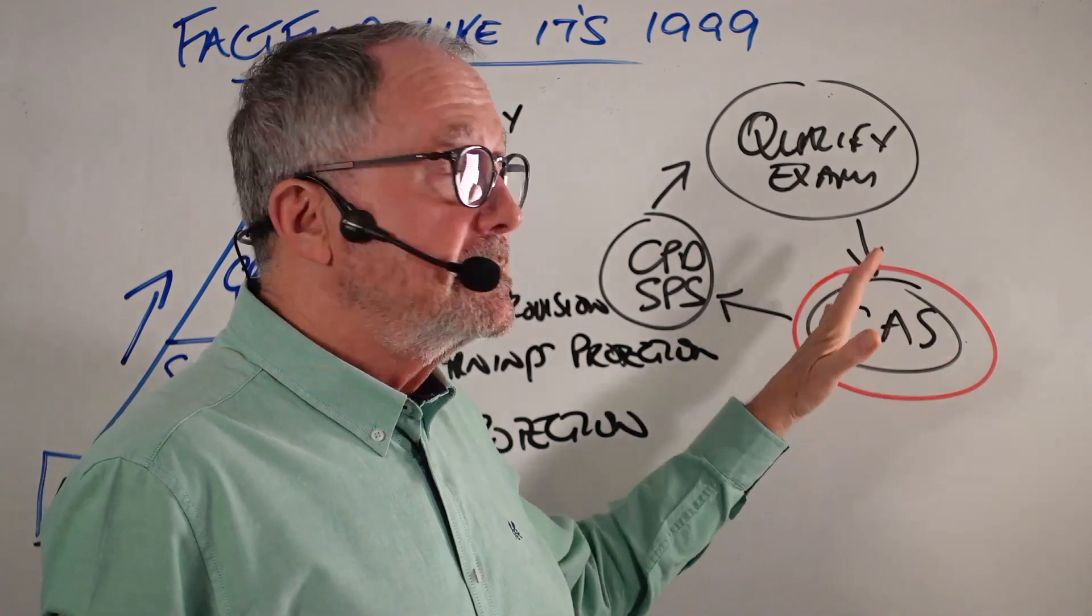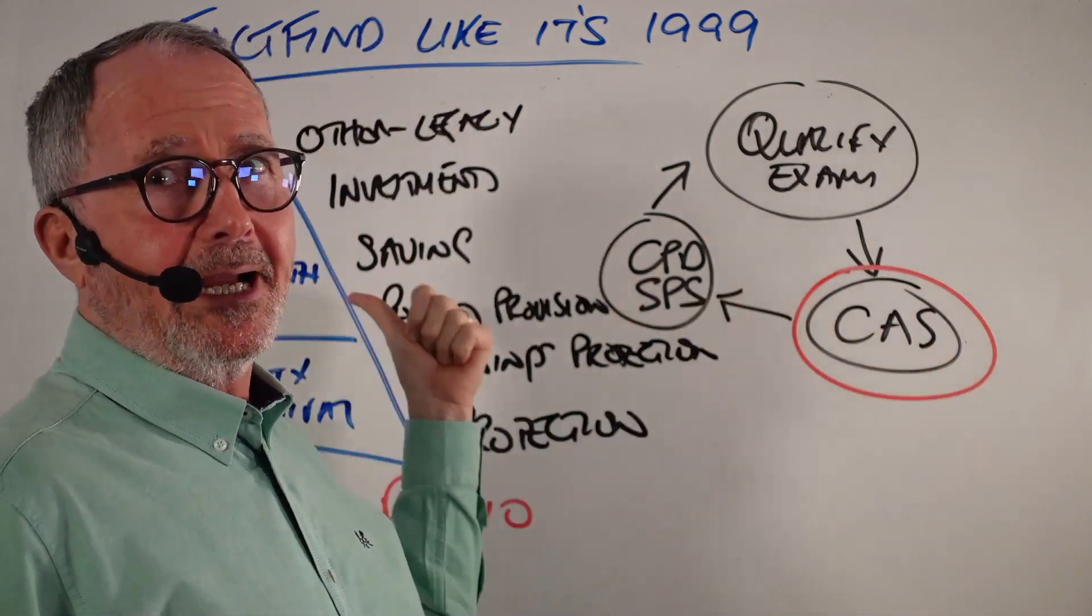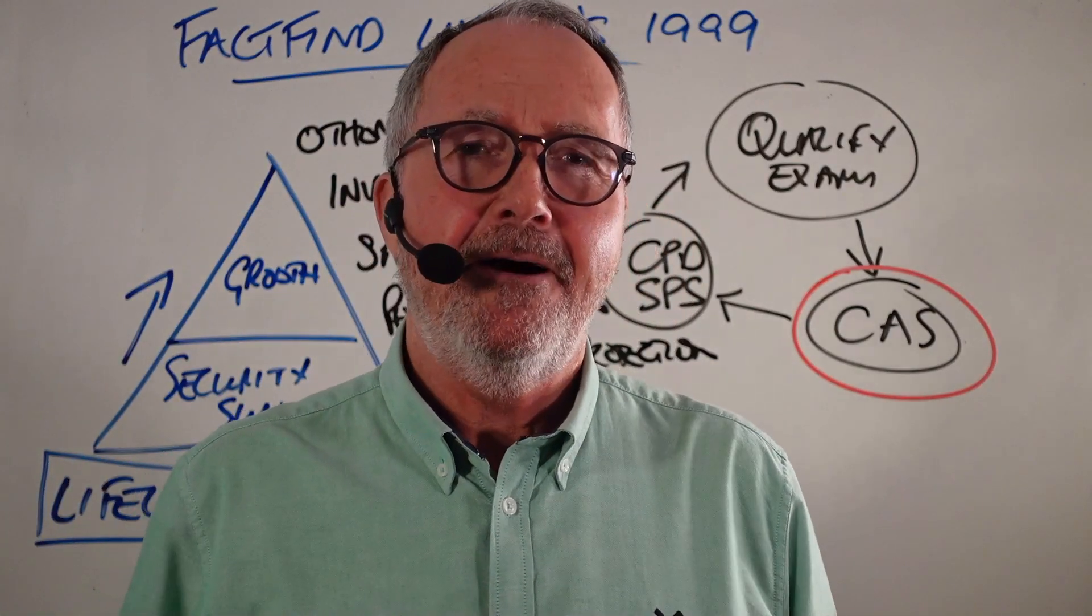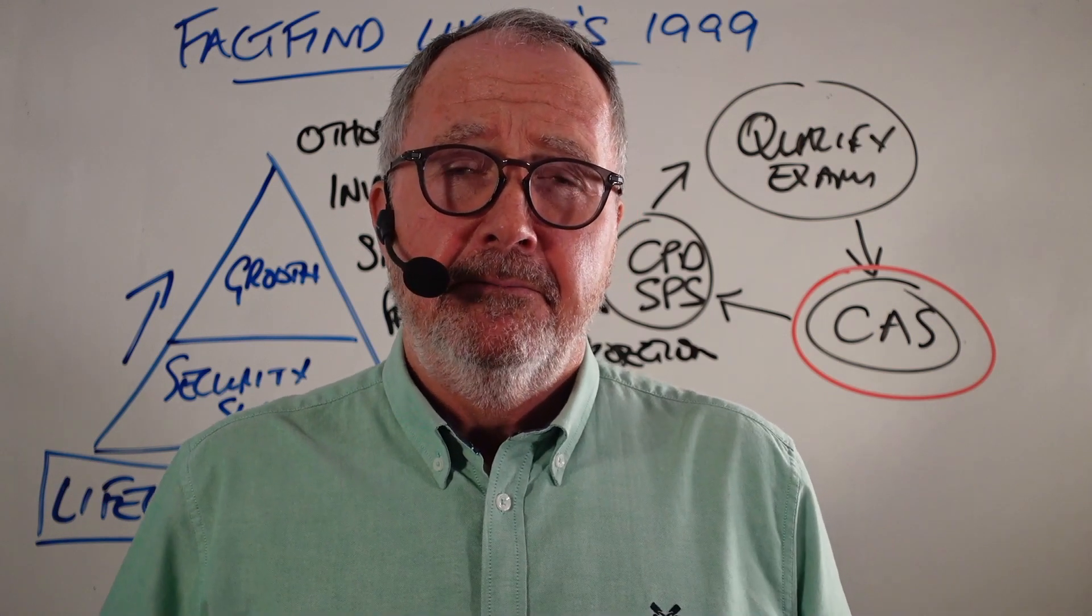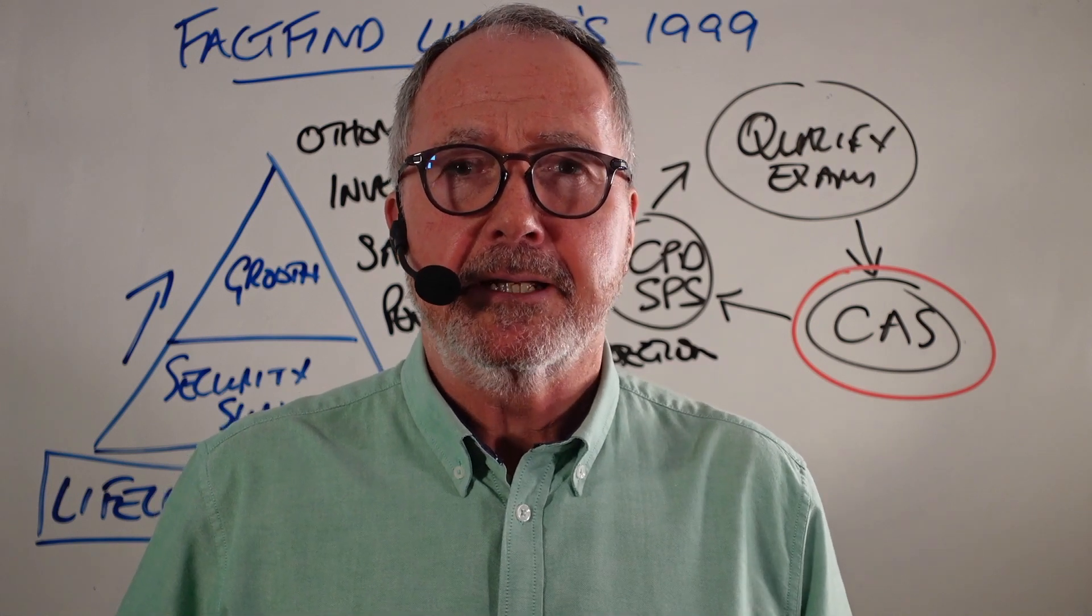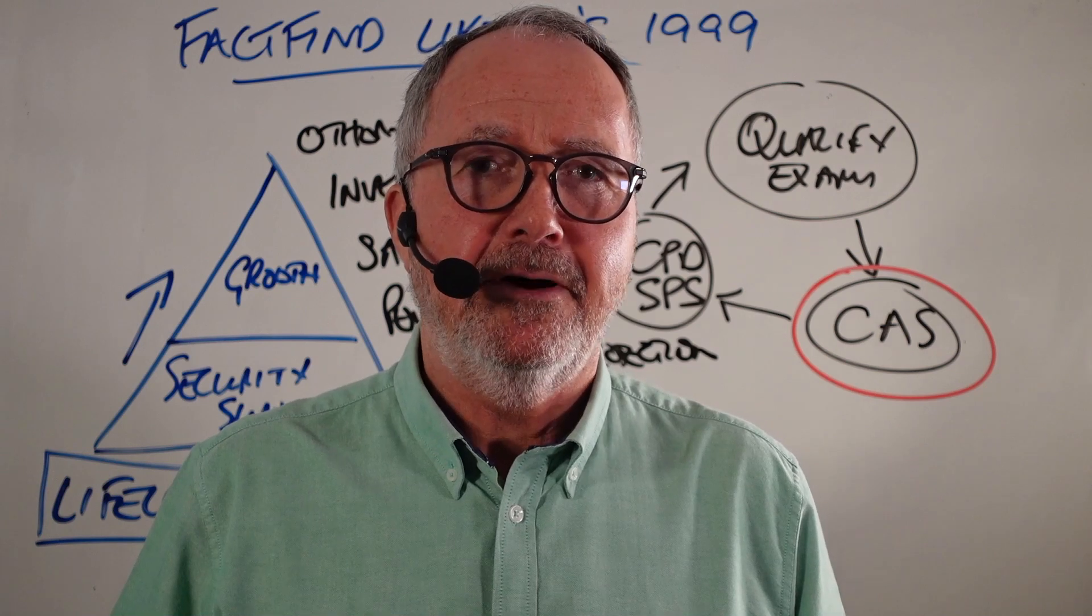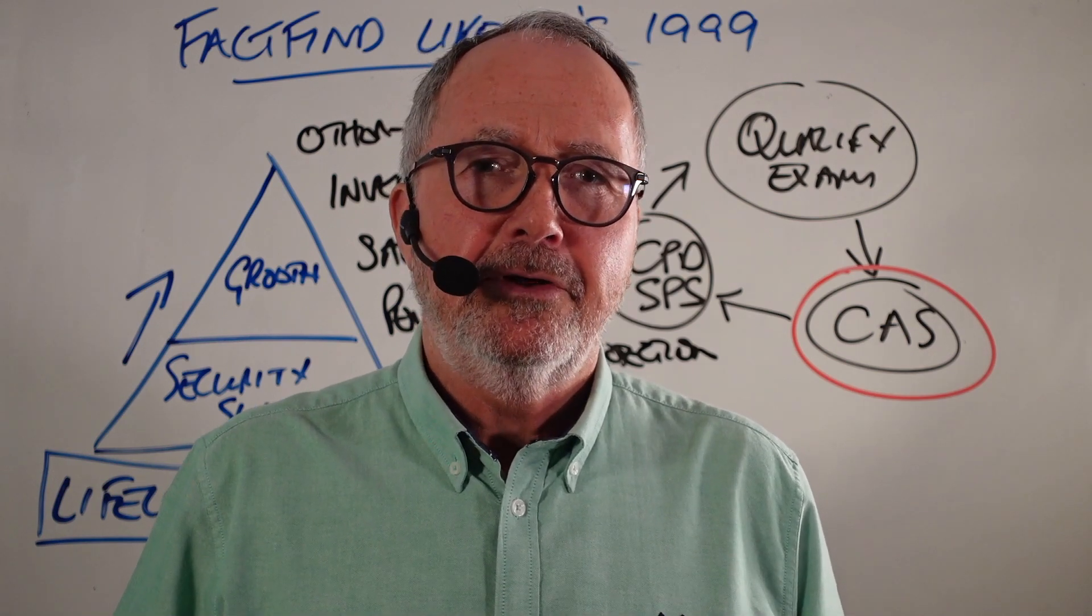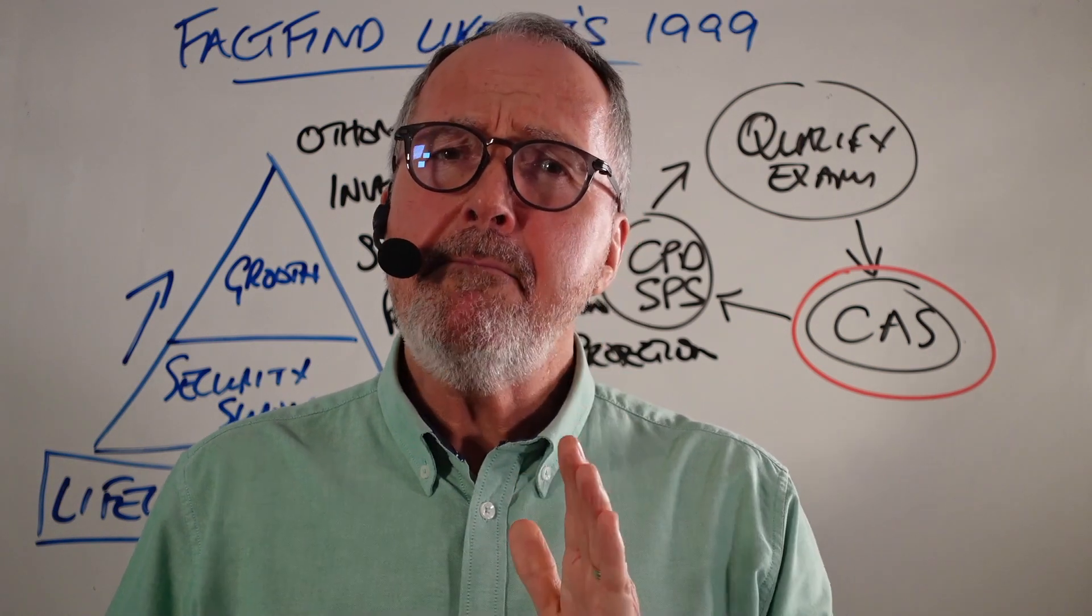CAS is obviously the skills and the compliance, but it's also how you do the fact-finding. If you don't have a fact find, just Google it. There's plenty of financial advisors who put their fact find online for clients to download and fill in before they have their meetings. Just do a Google search for PDFs for fact finds, and you'll get loads of examples. You can start using those to supplement your existing fact find.